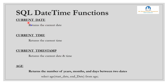SQL date-time functions are important functions. For example, in a customer table we have date of birth and last update columns. The CURRENT_DATE function returns the current date. CURRENT_TIMESTAMP returns the current date and time. The AGE function returns the number of years, months, and days between two dates — so if you have two dates, the difference in years, months, and days is returned by the AGE function.